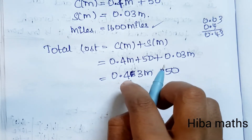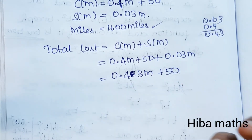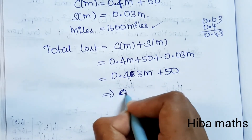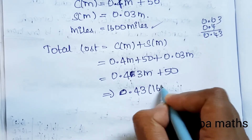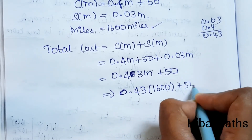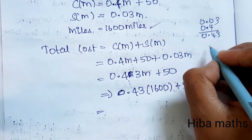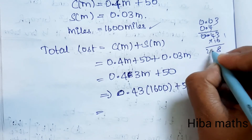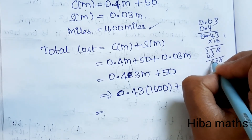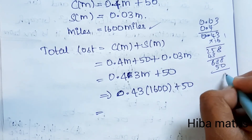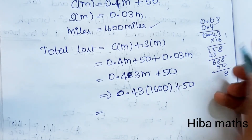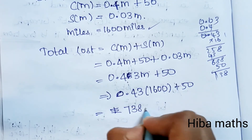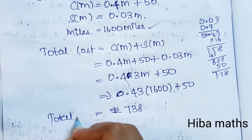For the total cost at 1600 miles, substitute M equals 1600: total cost equals 0.43 into 1600 plus 50. Multiplying gives 688, and adding 50 gives a total cost of 738 rupees.